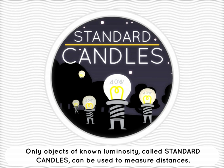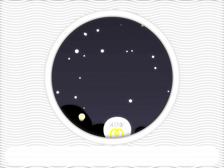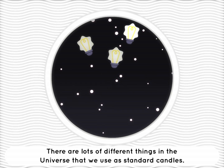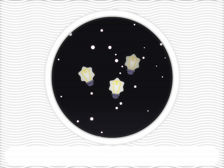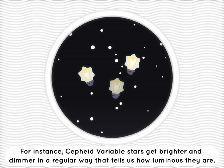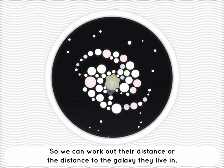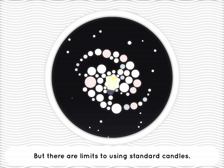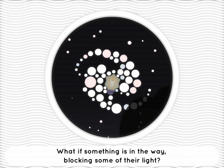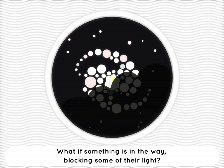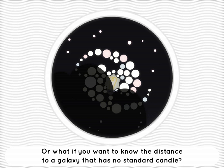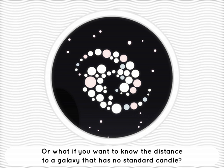Only objects of known luminosity, called standard candles, can be used to measure distances. There are lots of different things in the universe that we use as standard candles. For instance, Cepheid variable stars get brighter and dimmer in a regular way that tells us how luminous they are, so we can work out their distance, or the distance to a galaxy that they live in. But there are limits to using standard candles — what if something's in the way blocking some of their light, or what if you want to know the distance to a galaxy that has no standard candle?